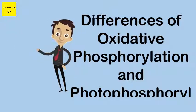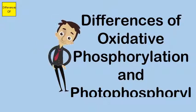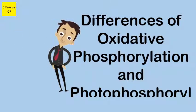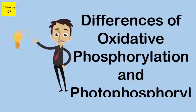Oxidative phosphorylation occurs inside the mitochondria, while photophosphorylation occurs in the chloroplast.